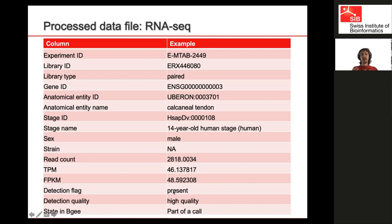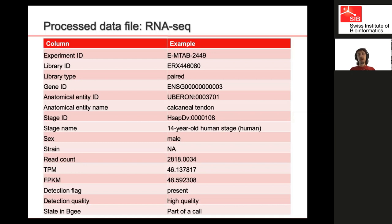We also provide the way we integrate data into BGee — present, absent, level of quality, and so on. These files are quite big because you have one row per combination of gene, anatomical structure, stage, sex, and strain, and if needed, replicates. So you will have many rows, but these are the files you can use if you want to integrate into your work and do differential expression, clustering, or anything you want.